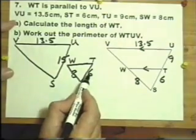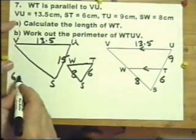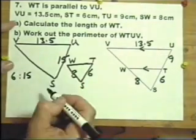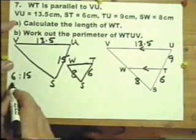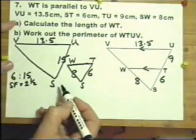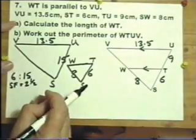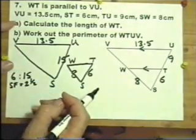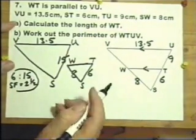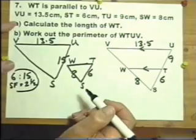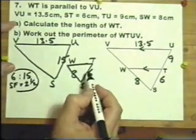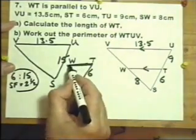You can work out that 6 to 15, going from the small to the big, is an enlargement of scale factor two and a half. Two sixes and half of six is 15. Two and a half times six is 15. This will work, there's nothing wrong with that method at all, but I prefer to write them down in ratio. What I mean by that is WT is what I have to find.